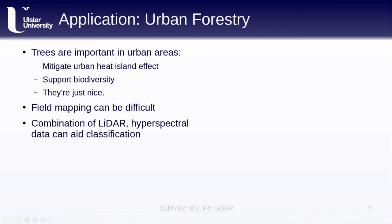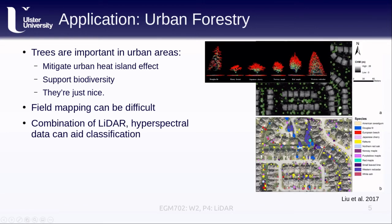The combination of LiDAR and hyperspectral data can really aid classifying different trees. If you look at the example here, this is from a paper by Liu et al in 2017, looking at urban forestry in Surrey, British Columbia. One thing that we see with the LiDAR data is that there is a very clear signature of each of these different types of trees.